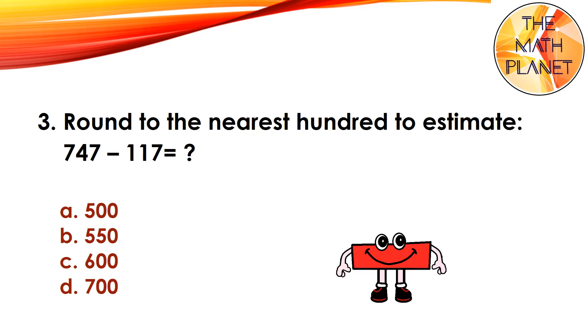Question 3. Round to the nearest hundred to estimate 747 minus 117. The correct answer is C because 700 minus 100 equals 600.